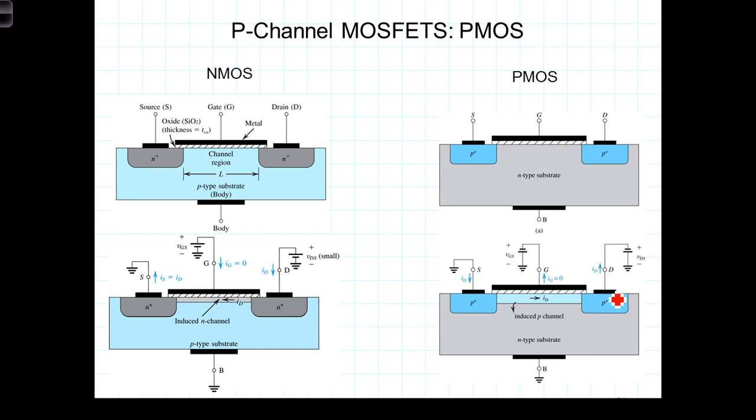Otherwise, the operation of the P-MOS transistor is similar to that of an N-MOS transistor. The concepts of cutoff, triode, and saturation regions are analogous to those in the N-MOS transistors.